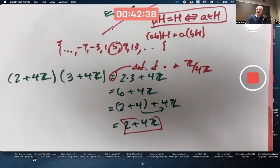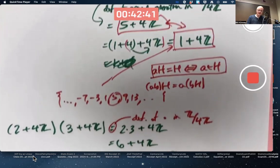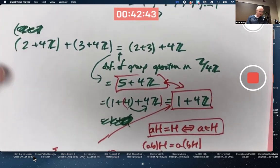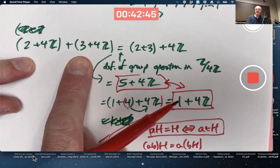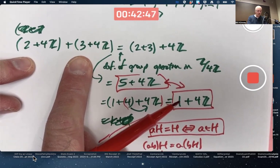These operations, and we could do more examples to verify this, are very similar to the fact that 2 plus 3 equals 5, mod 4 is 1.